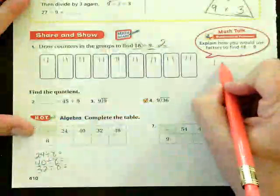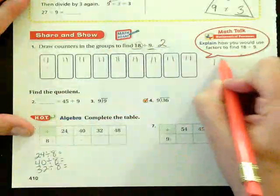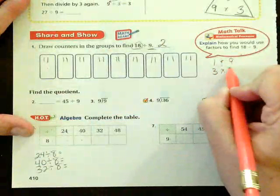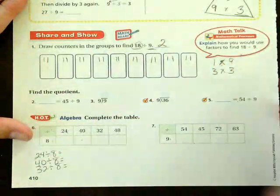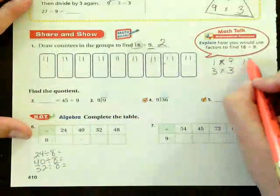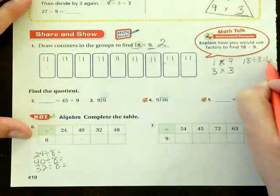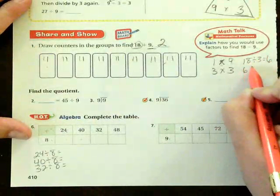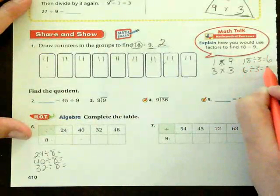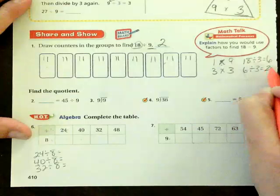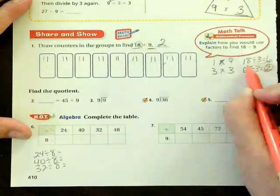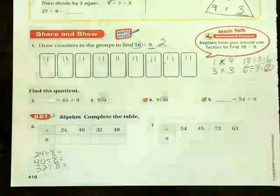Remember we've discussed factors of 9? Our factors of 9 are 1 and 9 and 3 times 3. Those are our factors. So if I wanted to do this, I would do 18 divided by 3 equals 6. 6 divided by 3 equals 2. 2 is my answer. That's how I would use factors.